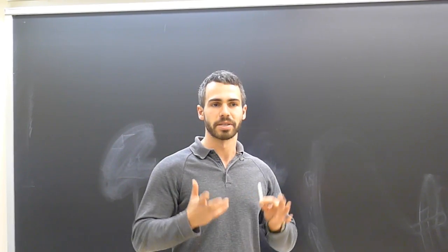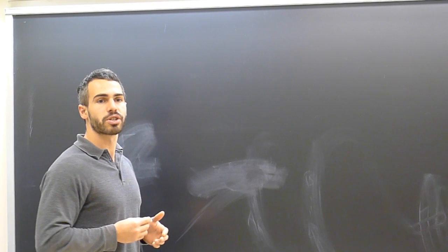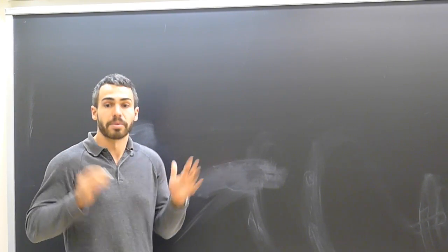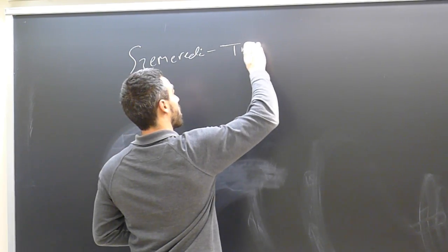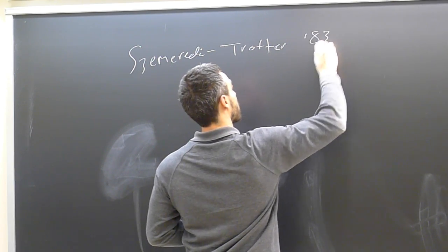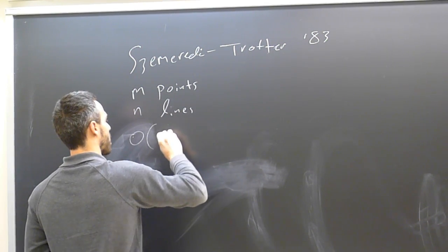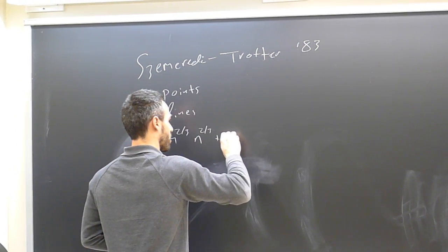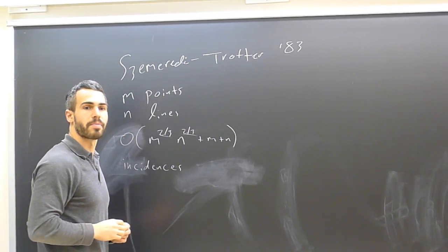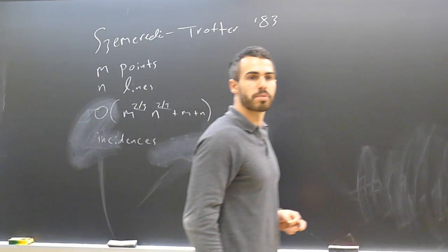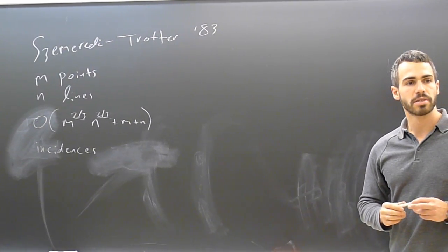Everything lives or dies by the exponents involved in understanding how many incidences there can be. This whole question really got started with Erdős, who considered points and lines in the plane and asked how many incidences there can be. This was answered by Szemerédi and Trotter: if you have m points and n lines, there can be at most m to the two-thirds times n to the two-thirds plus m plus n incidences. Their proof was quite complicated, but there is a more modern proof due to Székely from around 1997 which uses the crossing lemma.